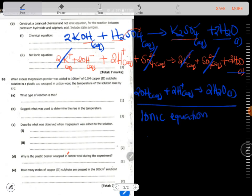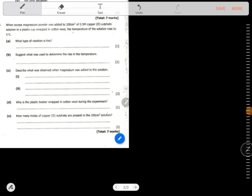That's an ionic equation. That's how you write ionic equation. Let's go on. Question B5. Now we have a question that says when excess magnesium powder was added to, so we have magnesium powder that was added to copper 2 sulfate. Copper 2 sulfate has a volume of 100 cubic centimeters. It also had a concentration of 0.5 molar.